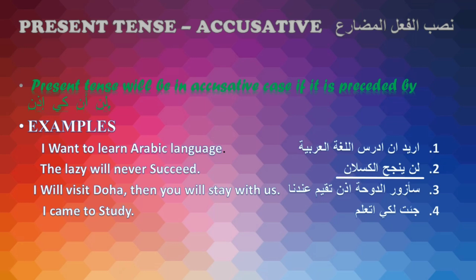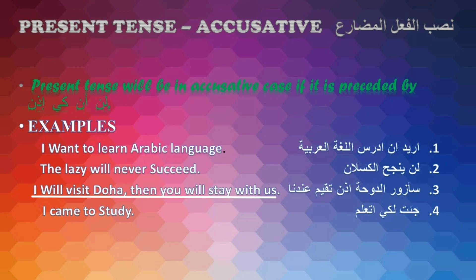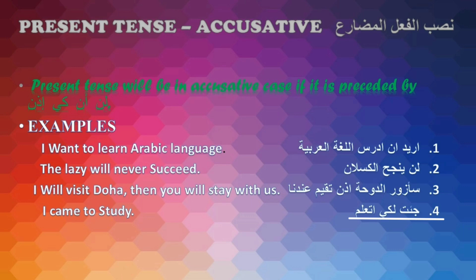Third particle is 'Izan'. For example, Sa'azuru ad-Duha, Izan tuqima indana — I will visit Dhuha, then you will stay with us. Here 'Izan' is Huruf ul-Nasb and 'tuqima' is fil-ul muzari mansoob. Another example: Ji'tu li-kay ata'allama — I came to study. 'Li-kay' is Huruf ul-Nasb and 'ata'allama' is fil-ul muzari mansoob.